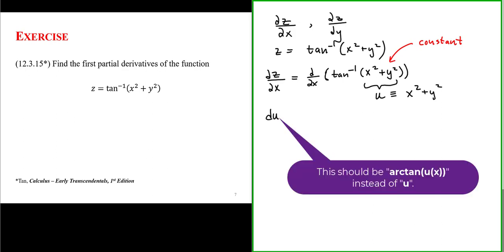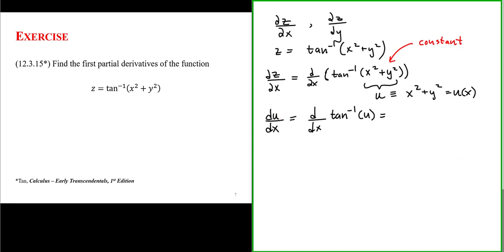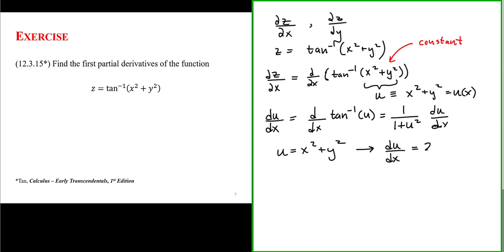If we're trying to find the derivative of u with respect to x, and here u is essentially a function of x because we're treating y as if it's a constant, this would be the derivative with respect to x of the inverse tangent of u. This evaluates to 1 over 1 plus u squared, times du/dx. Since u equals x squared plus y squared and y is a constant, du/dx equals 2x.